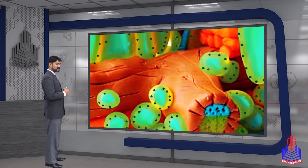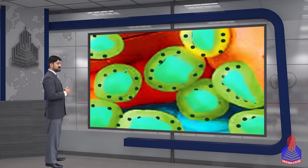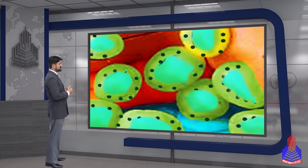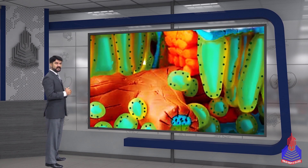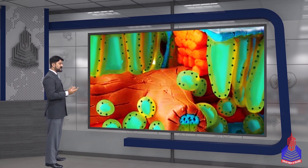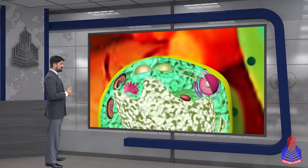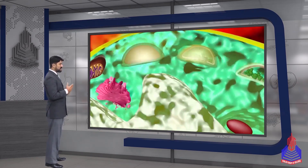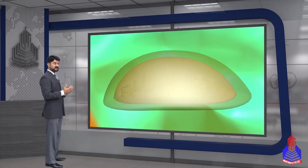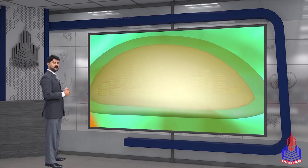They are called the palisade mesophyll cells. If we look at this side, we have loosely packed, oval-shaped cells. Now there is a common thing — we can do photosynthesis. If we can do photosynthesis, the cells will be packed with chloroplasts. Now we can see one cell and the chloroplasts. When I look at the chloroplasts, I have two membranes.